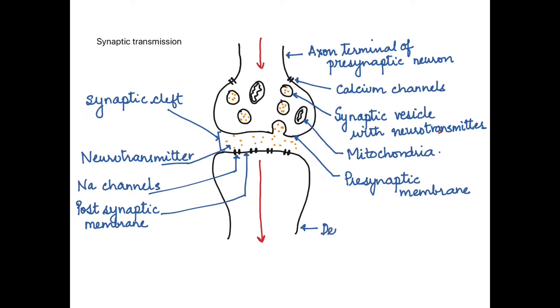Now as soon as the neurotransmitters bind to these sodium channels, the sodium channels open allowing the sodium to enter inside. So once the sodium enters the dendrite of the postsynaptic neuron, the polarity of the neuron, the second neuron, changes. If it reaches the threshold then the nerve impulse is conducted to the next neuron.